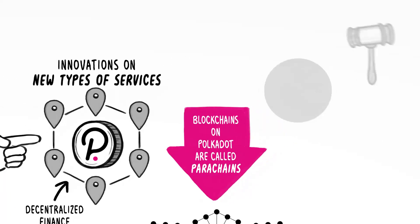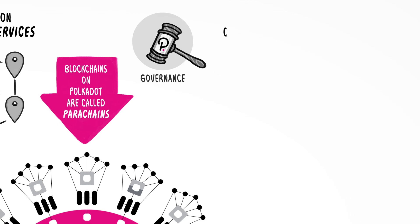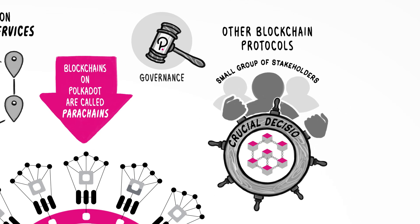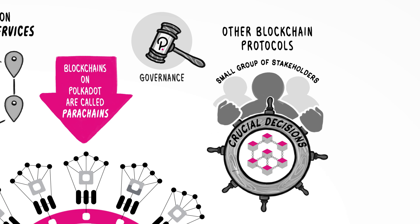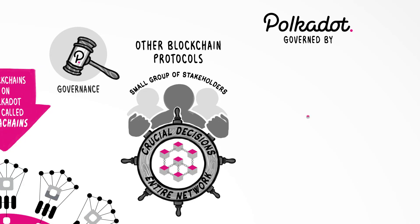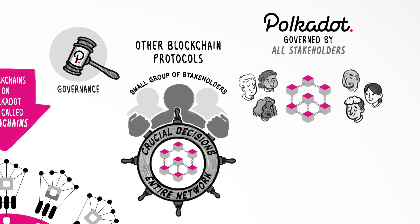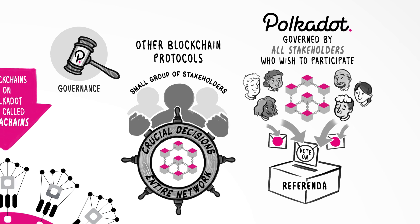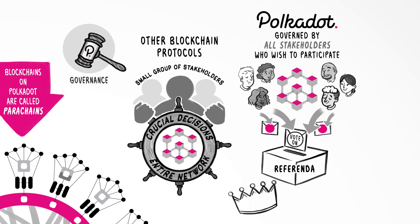So, what about governance? Other blockchain protocols often have a small group of stakeholders, making crucial decisions in an opaque way for the entire network. Polkadot is governed transparently on-chain by all stakeholders who wish to participate, by proposing and voting on referenda, using Polkadot's native token, the DOT. Individual parachain teams are completely sovereign and free to govern their own blockchains in any way they see fit.